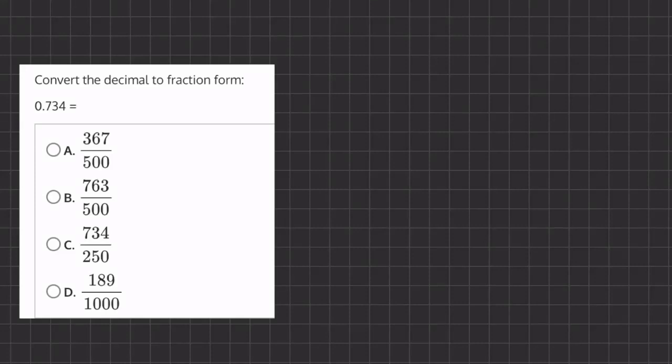All right, so in this problem we are taking 0.734 and turning it into a fraction. So let's take 0.734, and we want to get rid of this decimal.